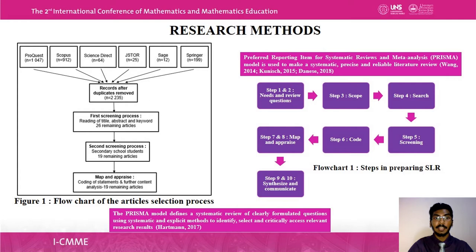The first and second steps are needs and review questions. We identified the need for this systematic literature review and the research questions. The third step is scope — narrowed down to include journal articles in mathematics education, participants for secondary school students, papers published in English, to avoid the risk of difficult or ambiguous translations.